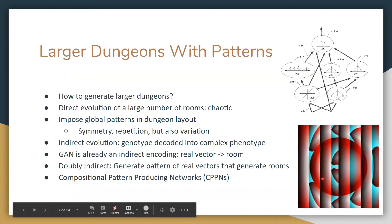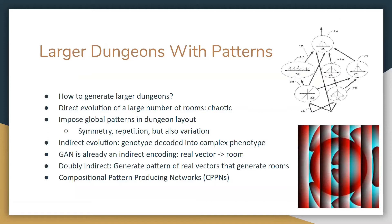The big idea Sebastian came up with was: what if we wanted to generate large patterns in these GAN levels? Specifically, how would we generate larger dungeons with patterns such as symmetry, repetition, and also variation? If you just want to make a big dungeon level, you could directly evolve a bunch of latent vectors — I'll show an approach that does that — but if you want patterns, a better way is to use an indirect encoding. A GAN is already an indirect encoding: it evolves real-valued latent vectors, and the GAN decodes those into levels — that's one level of indirection.